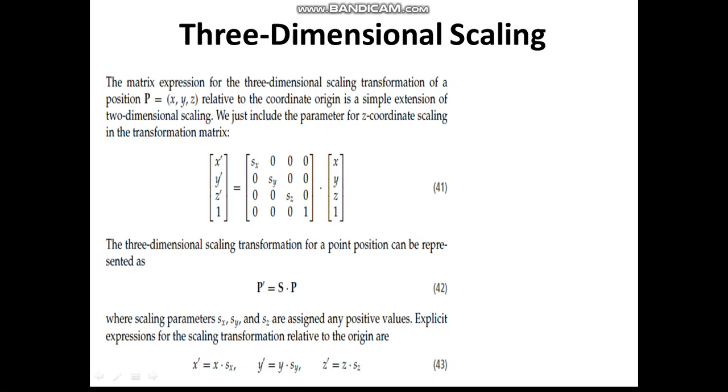We can represent this in homogeneous coordinate system representation where we take p dash equals S into P form, where p dash is a column matrix having x dash, y dash, z dash, 1, and P same as what we have seen here.